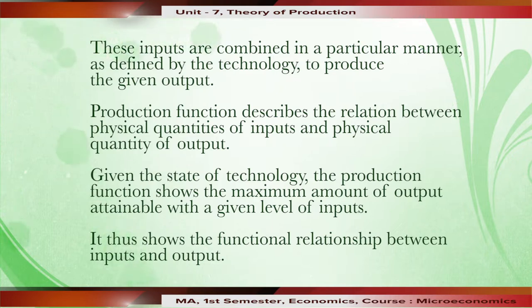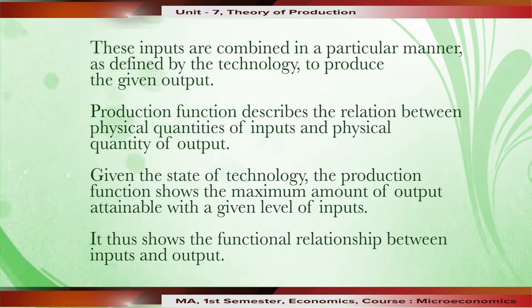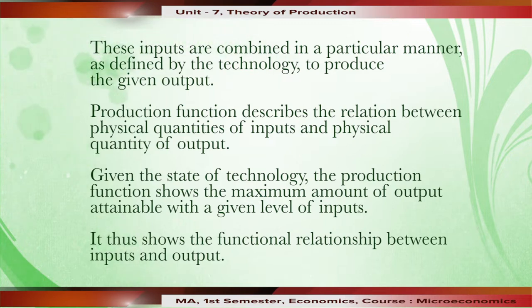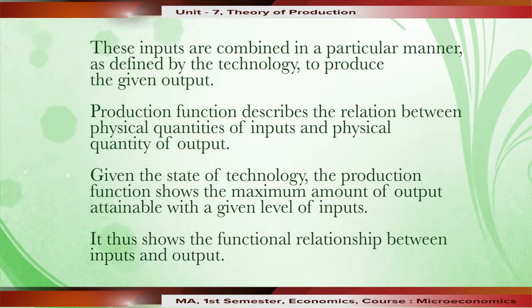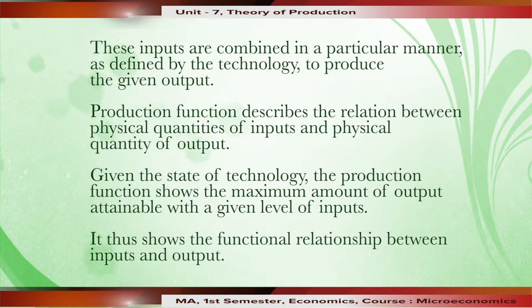Whenever we are talking about production function, it basically describes the relation between physical quantities of inputs and physical quantity of output. Given a state of technology, the production function shows the maximum amount of output attainable with a given level of input. It thus shows the functional relationship between inputs and output.